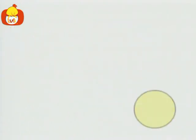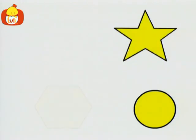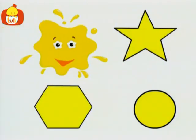A circle, a star, a hexagon. All are yellow.